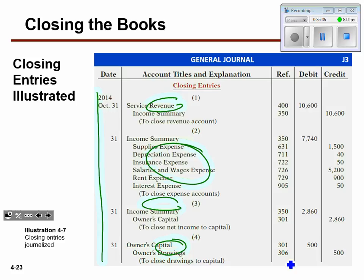Did this have a net income or loss? Just by looking at it — here's revenue, here's expenses. $10,600 is definitely larger than $7,740, so it's a net income.